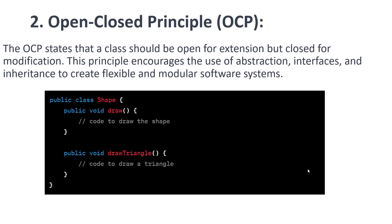The second principle is the Open/Closed Principle. The OCP states that a class should be open for extension but closed for modification. This principle encourages the use of abstraction, interfaces, and inheritance to create flexible and modular software systems.